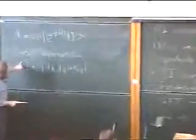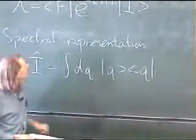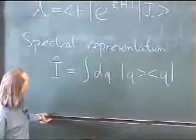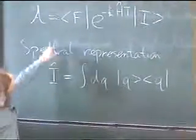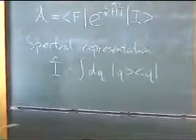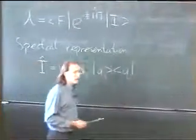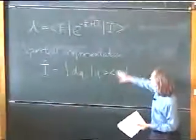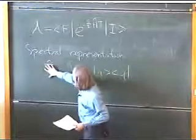Okay. What we're doing here. We wanted to write this as a way of evaluating this amplitude here. So what we do is, this is called the spectral representation for the identity operator.